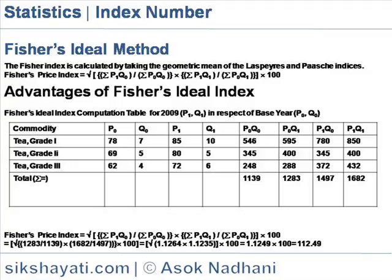The next table shows the computation of Fisher's index. The first column shows the commodities. The second column, P0, is the price in the base year for the respective commodity. The next column, Q0, shows the quantity in the base year. The next column, P1, shows the price in the current year. Q1 shows the quantity in the current year.